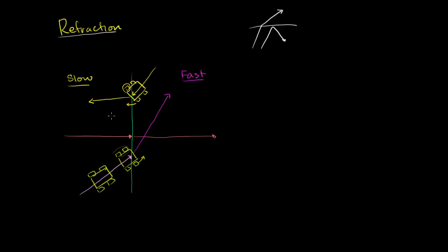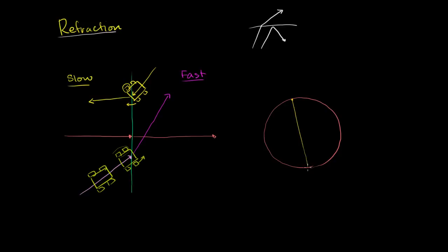That's a general primer on refraction. Now let's think about what happens when seismic waves travel through the Earth — this will help us figure out the actual structure of the Earth. If the Earth were made of uniform material and you had an earthquake a little below the surface, P waves would just travel in straight lines radially outward from the earthquake, because there would be nothing to refract them.